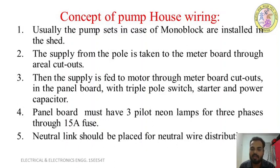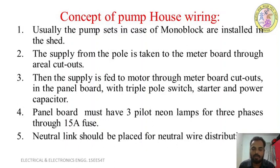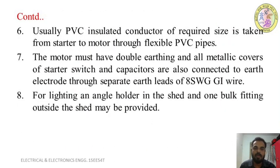The panel board must have three pilot neon lamps for the three phases (R, Y, B) through 15-ampere fuse units. A neutral link should be placed for neutral wire distribution for all lighting installation purposes. PVC insulated conductors of the required size are taken from the starter to the motor through flexible PVC conduit pipe, with a proper cable size selected for the connection.